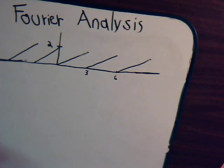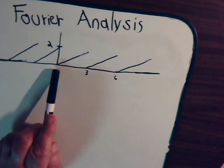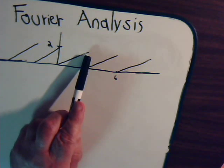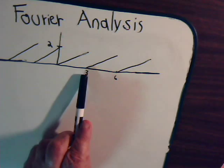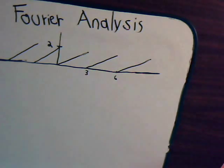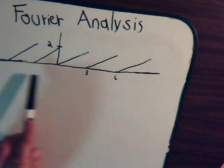Now suppose we just have a simple sawtooth function where we start here at zero and it goes up to a value of two and it collapses down to zero again at the point three, then it goes up to two to reach the point six, then it's zero again and it keeps repeating this pattern.